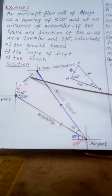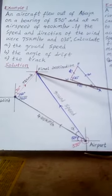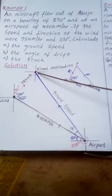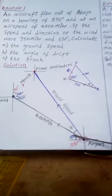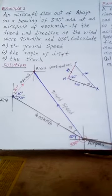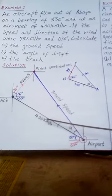And this is the wind source. The wind is going this direction, 30 degrees northeast.